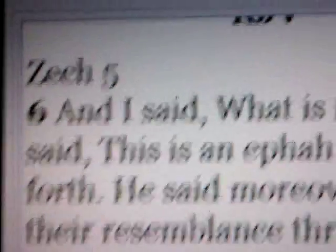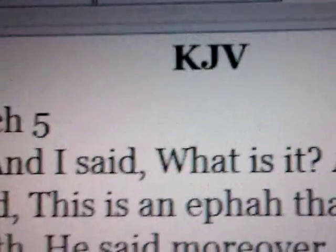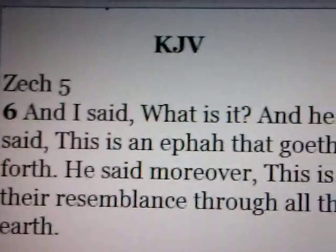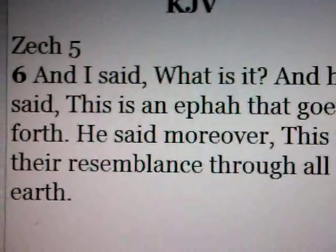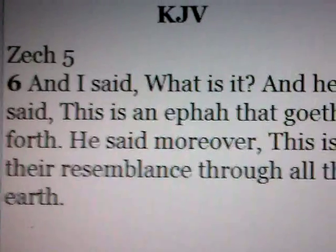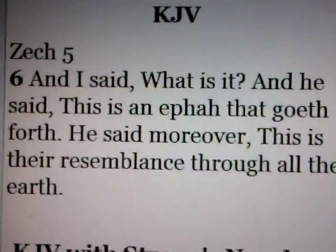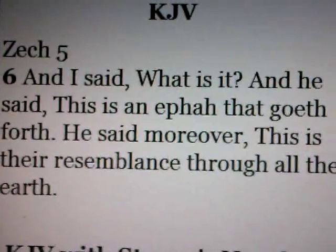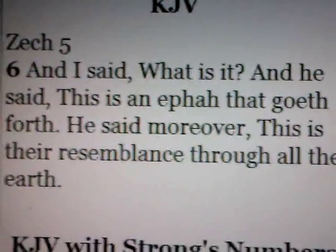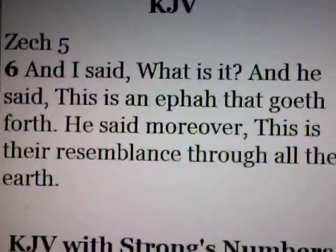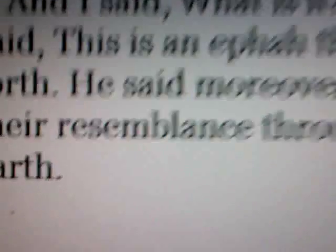And here we already went through this, but let's go through this again, the King James Version. Zechariah chapter 5, verse 6. And I said, what is it? And he said, this is an ephah that goeth forth. He said, moreover, this is their — look at that key word — their resemblance through all the earth.